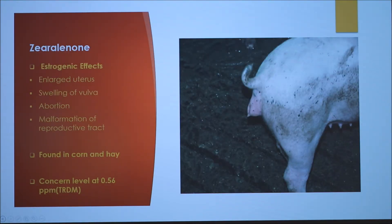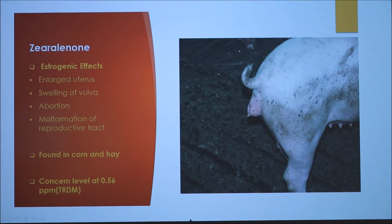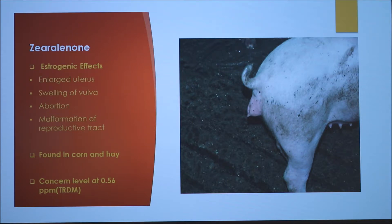Next we have zearalenone, which is known for its estrogenic effects. Zearalenone can cause enlarged uterus, swelling of the vulva (pictured here in this slide), abortion, and malformation of the reproductive tract — more specifically, malformation of the testes or the ovaries. Zearalenone can be found in corn and hay, and the concern level is about 0.56 parts per million.